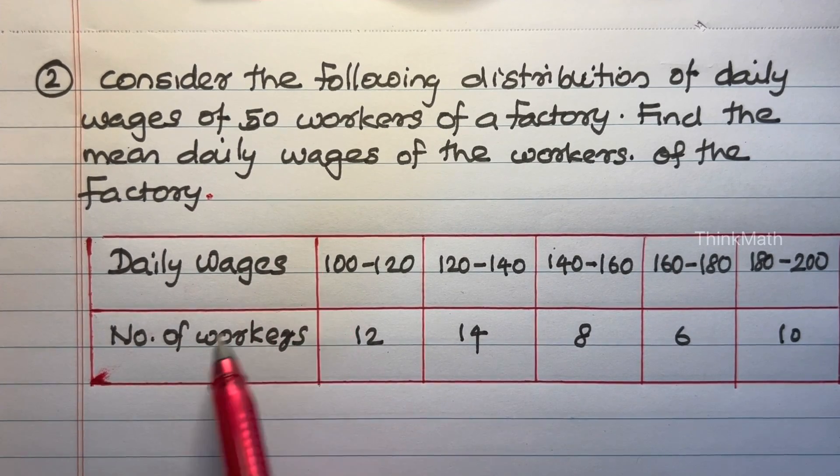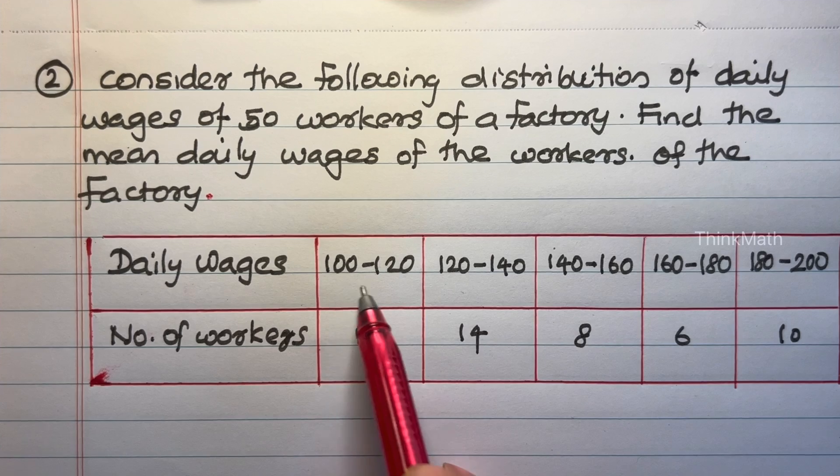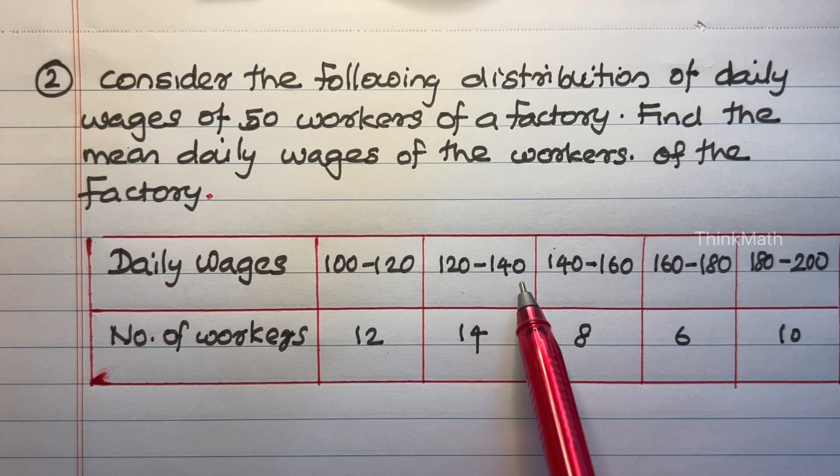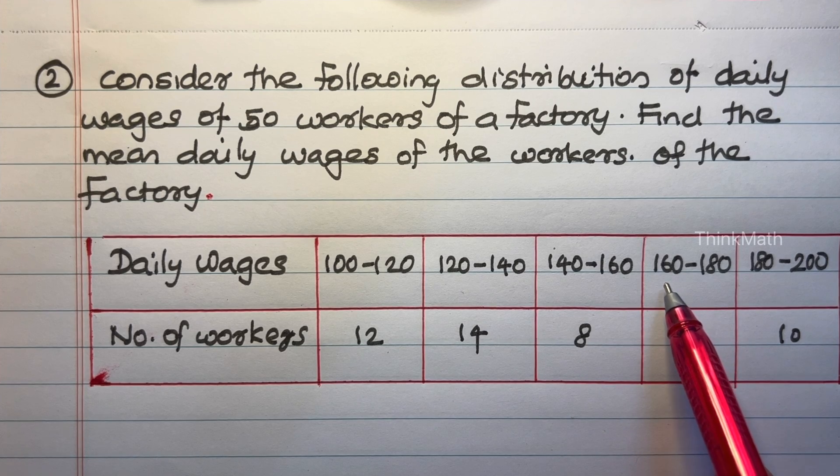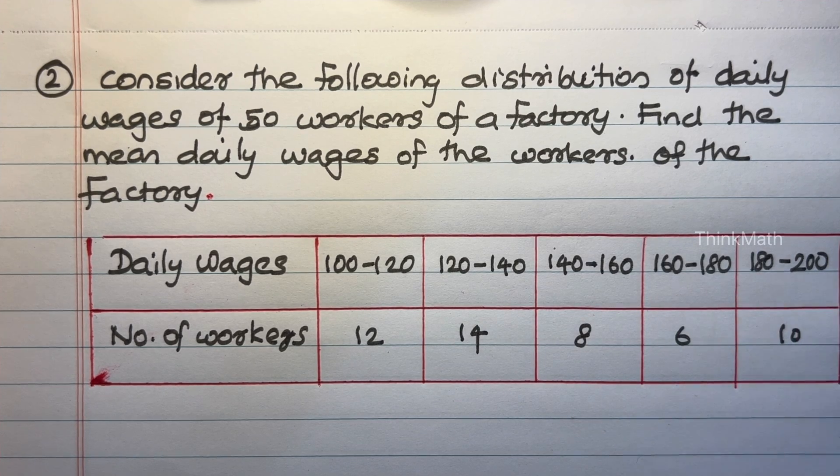So daily wages, number of workers: 100 to 120 is 12, 120 to 140 is 14, 140 to 160 is 8, 160 to 180 is 6, 180 to 200 is 10.